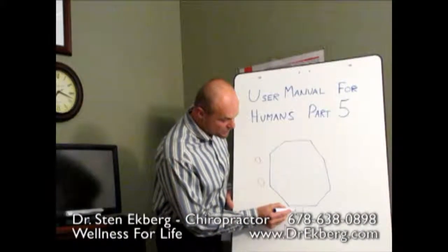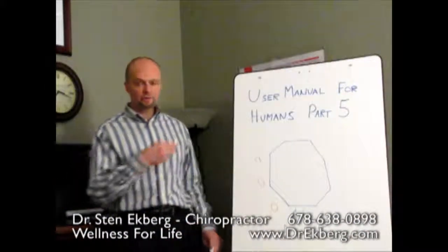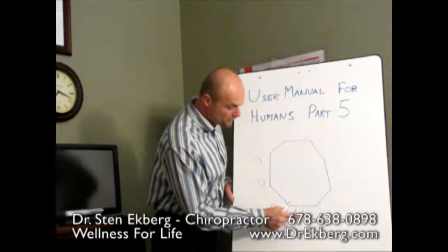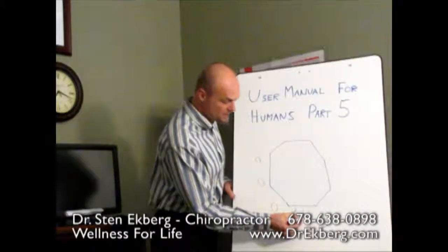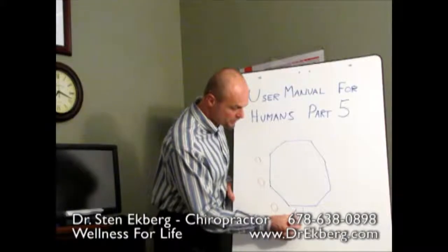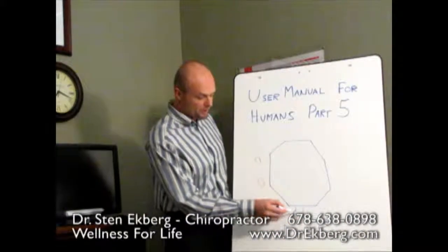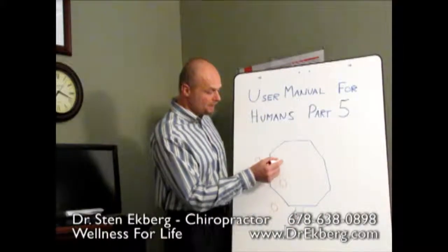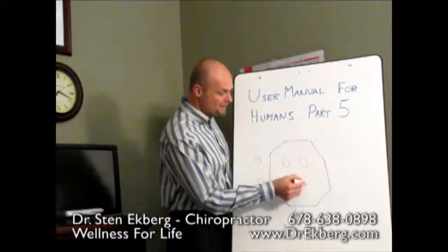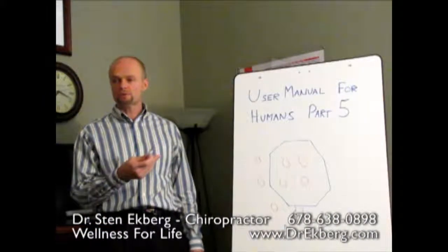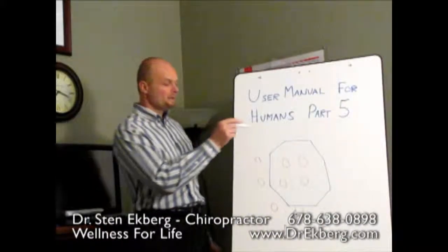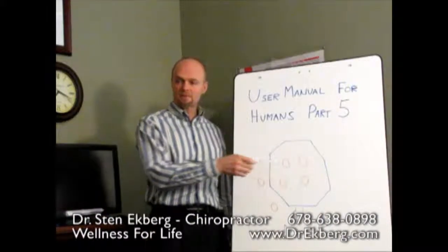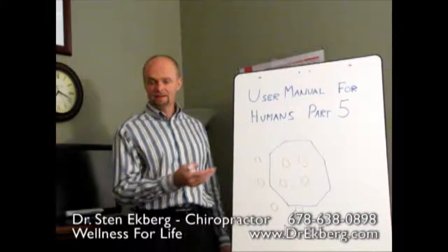Insulin makes its way and attaches to the receptor, and it causes a conformational change so that this channel is available to process and transport glucose. The glucose molecule was just floating around, but now because of the insulin it can get inside the cell. Inside the cell we need to maintain a certain amount of glucose to create energy for the metabolic processes and the life of the cell.